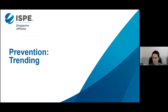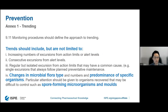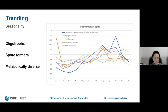Prevention is better than remediation. We'll start with one of the prevention mechanisms mentioned in Annex 1: trending. When talking about trending, Annex 1 covers common elements such as excursions, but also microbial counts. When it comes to microorganism counts, as well as the changing type of your microbial flora, these should be trended. We should be looking at the types of microorganisms and the predominance of specific organisms, for example spore-forming organisms and molds.